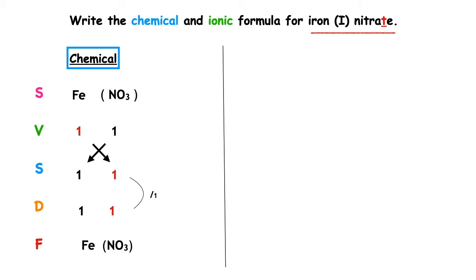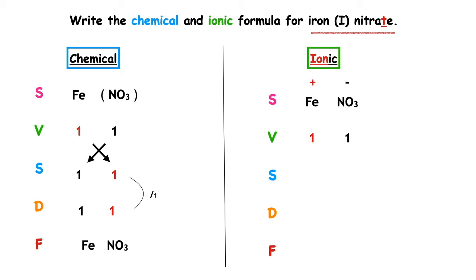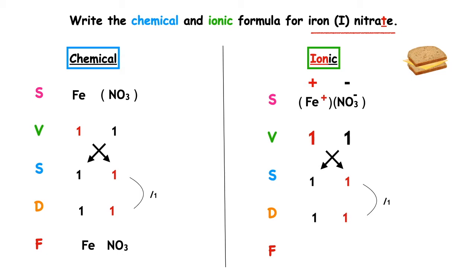For the ionic formula, the first couple of steps are the same. Symbol Fe, valency one. Symbol for nitrate NO3, valency one. Metals always lose electrons to form positive ions and non-metals form negative ions. One times positive is positive — keep it in a bracket. One times negative is negative — keep it in a bracket. Swap the valencies over; highest number is one. So the ionic formula is (Fe⁺)(NO3⁻). At this stage, because we have no number directly after the brackets, we can remove those brackets.